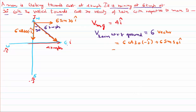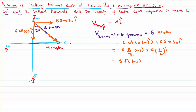We can rewrite this as: 6 × (√3/2) minus j-cap + 6 × (1/2) i-cap. That gives us 3√3 minus j-cap plus 3 i-cap. So the velocity of rain with respect to ground is 3i − 3√3 j. That is the second vector given in the problem.